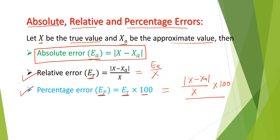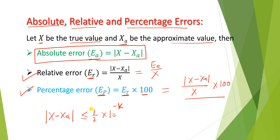The absolute error satisfies: modulus of x minus x_a is less than or equal to 1/2 times 10 to the power minus k. That is, when we compute the error correct to k decimal places, it should satisfy: modulus of x minus x_a ≤ 1/2 × 10^(−k).